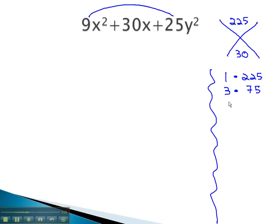4 does not go into 225, so we go to 5. 5 times 45 is 225, but again it does not add to 30. 6 does not work, neither does 7 or 8. But 9 times 25 will be 225, and again we find that will not add to 30.